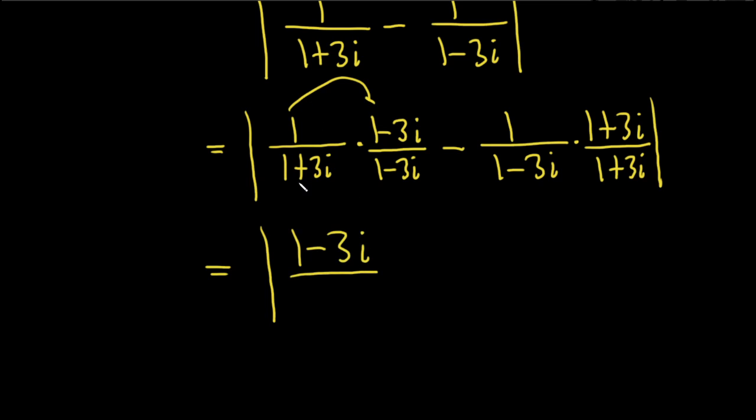Now whenever you have a complex number times its conjugate like this, so if you have a plus bi times a minus bi, this is actually equal to a squared plus b squared. The i's go away. You can show this, it's pretty easy to verify that.